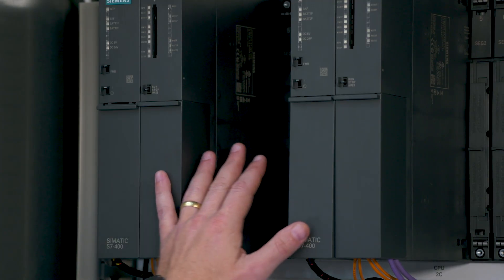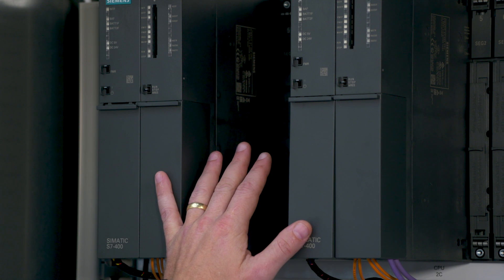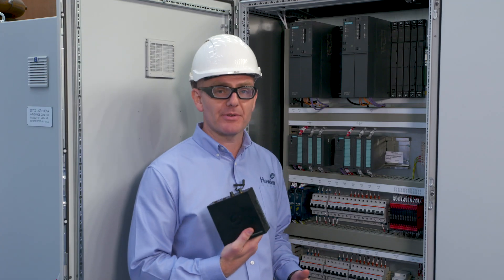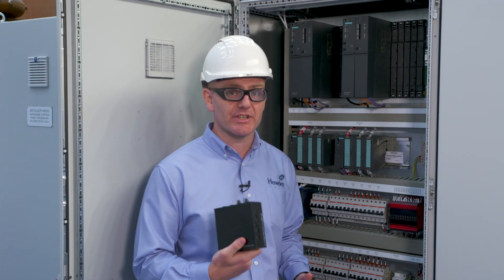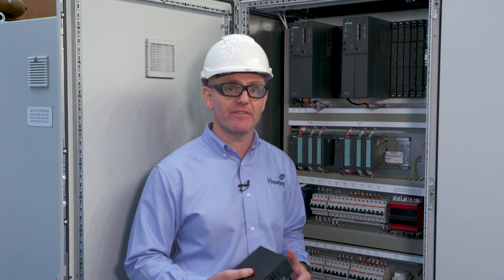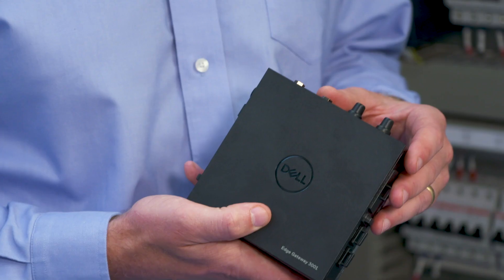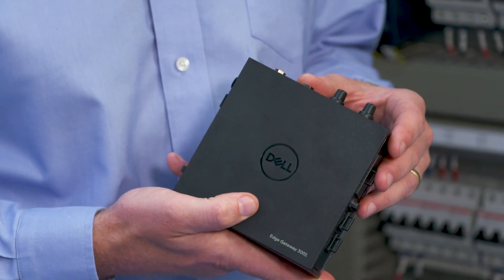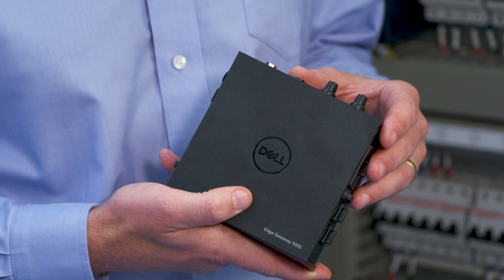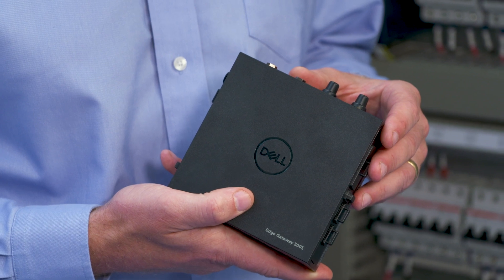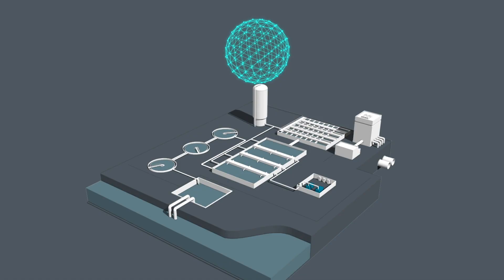Crucially, on that control system network we have our edge device placed there. It sits on the control system network and can passively gather all that data — both the performance optimization measurements and the machine condition monitoring measurements — and send it up to the cloud where it is stored.